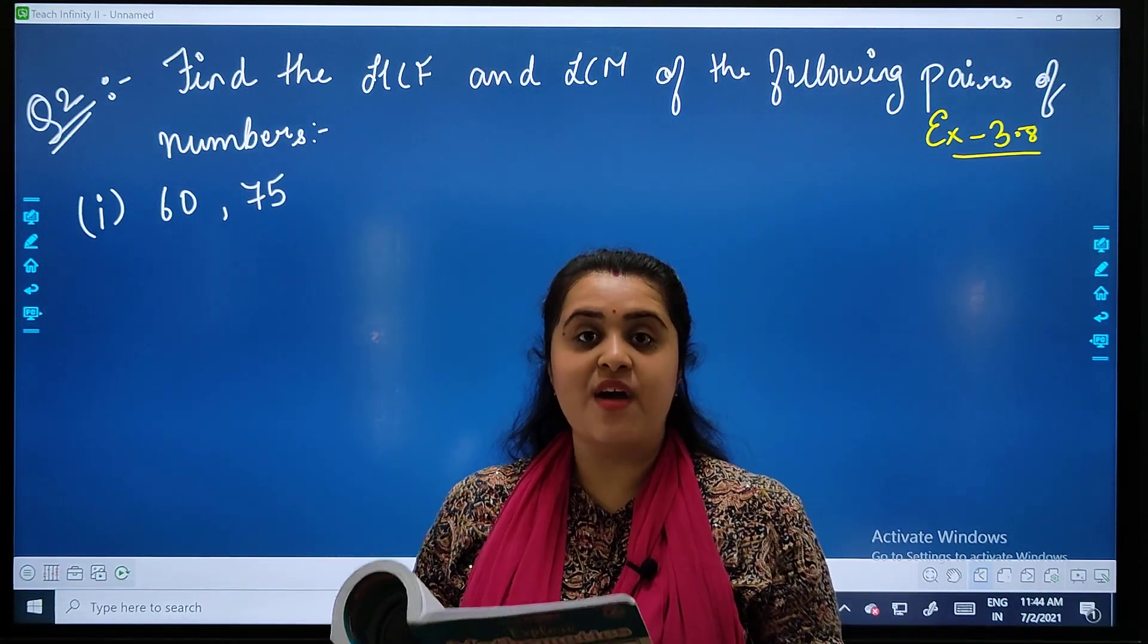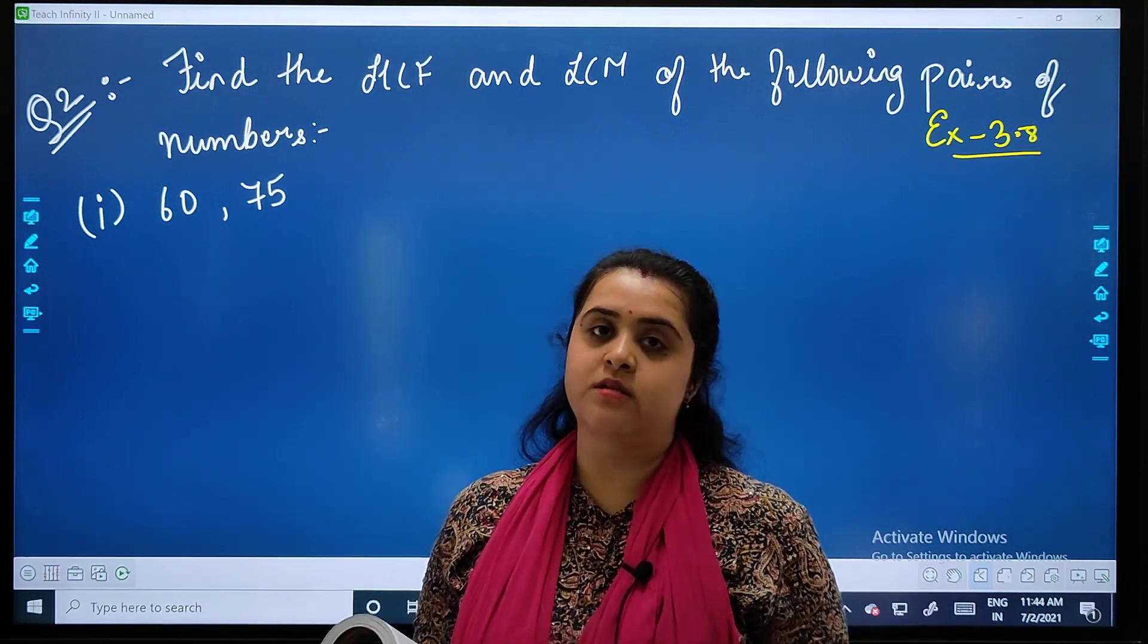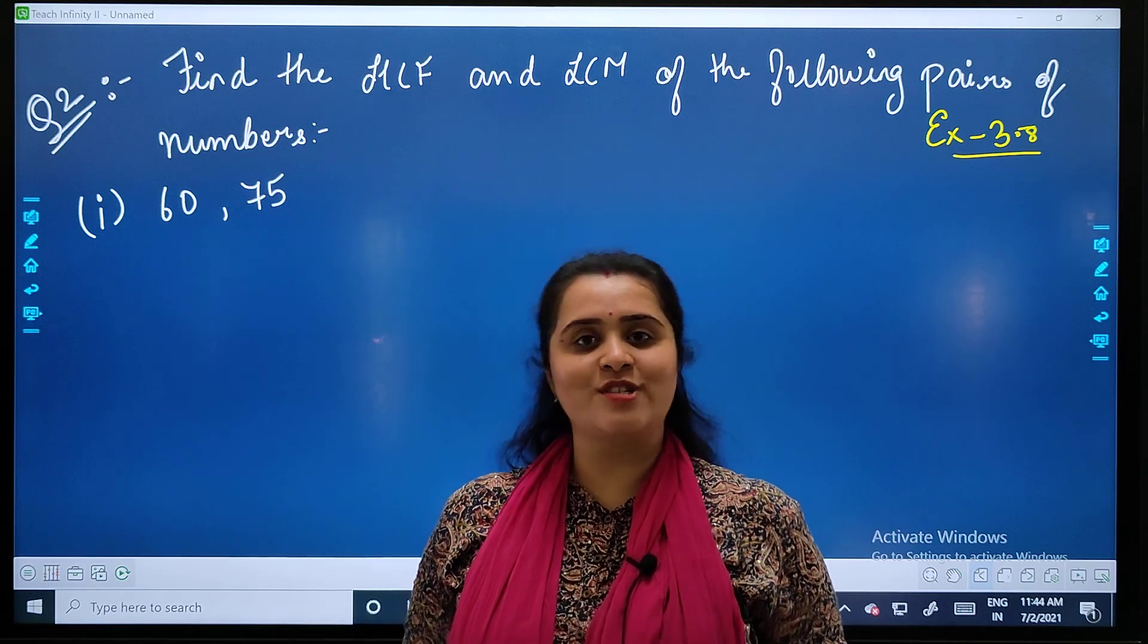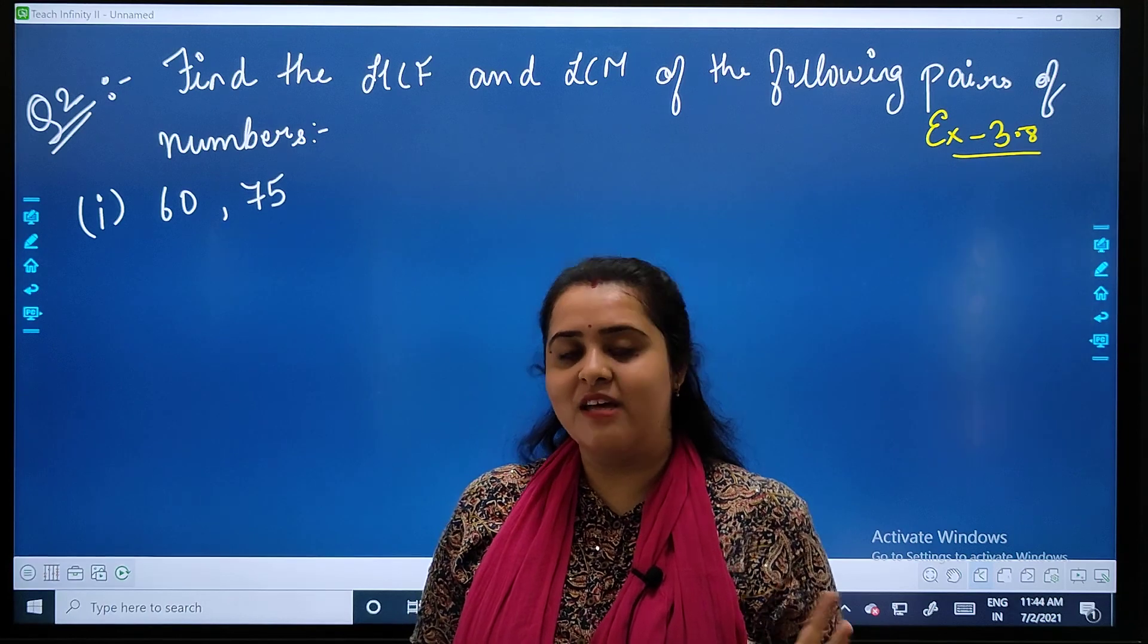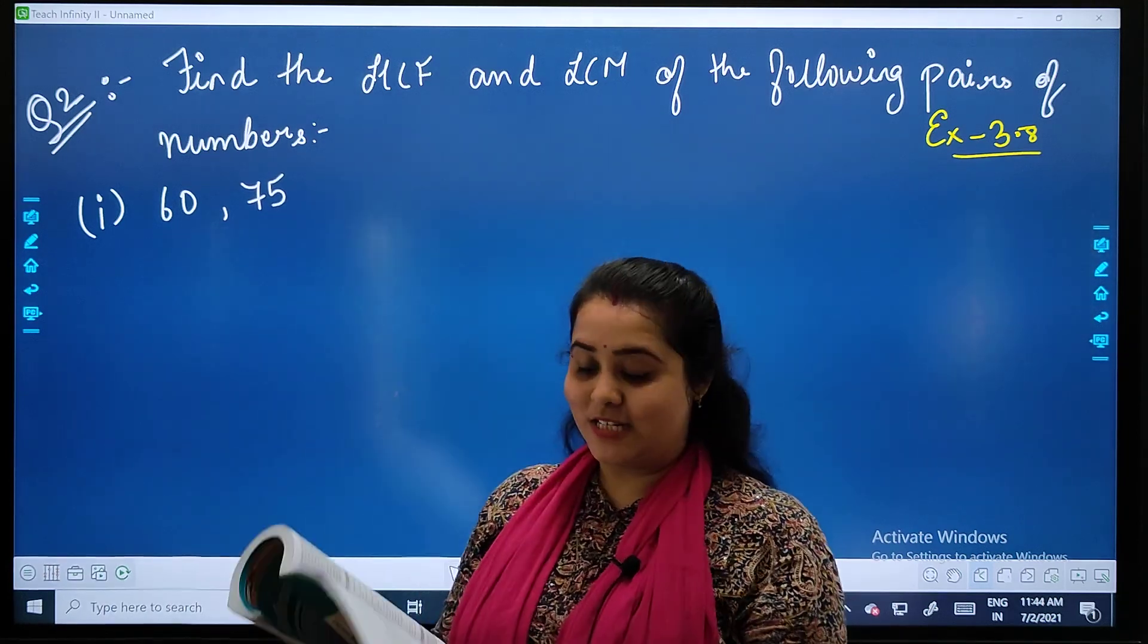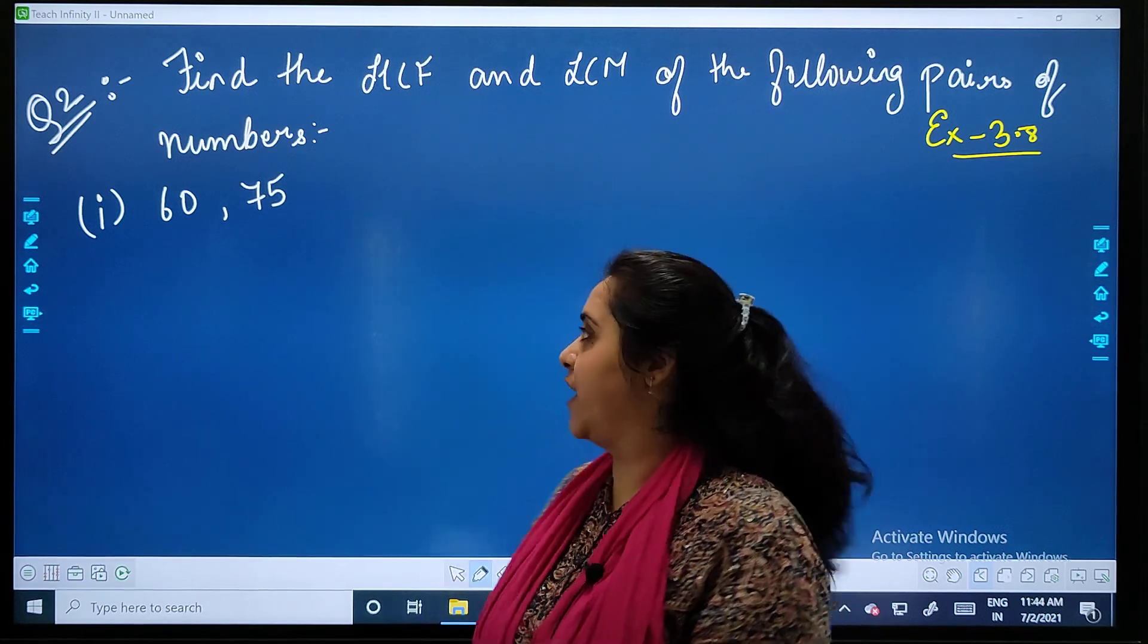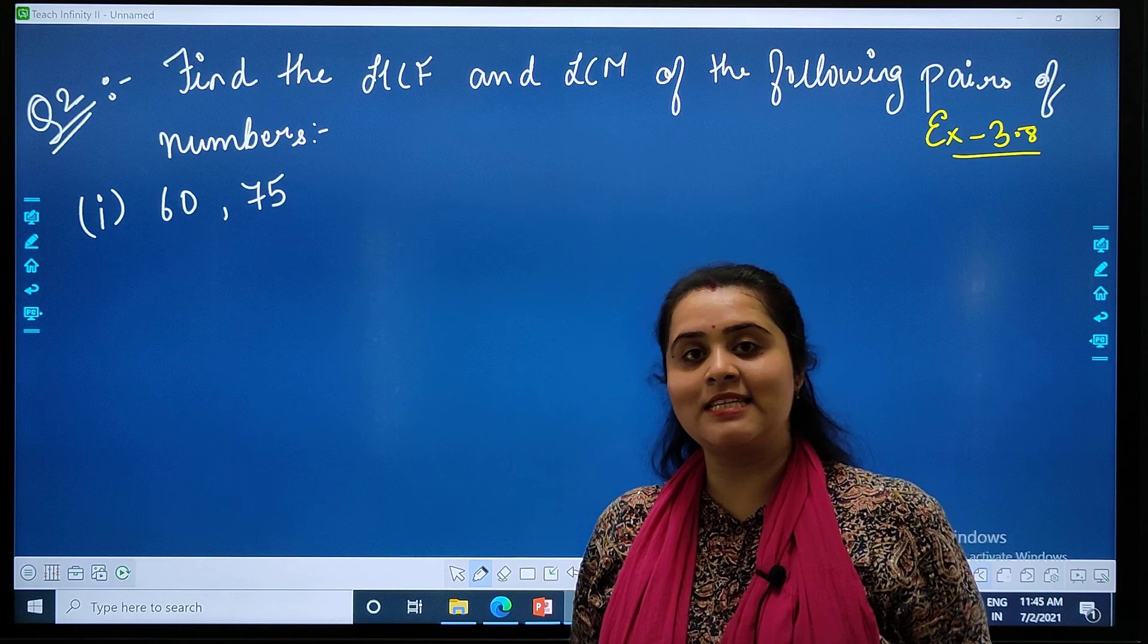Find the HCF and LCM of the following pair of numbers. We will be solving one sum so we can come to know how to solve it. How many HCF we solved here or how many LCM we solved here? Simple, let's solve it. The first sum is 60, 75. So how do we do HCF by factorization?